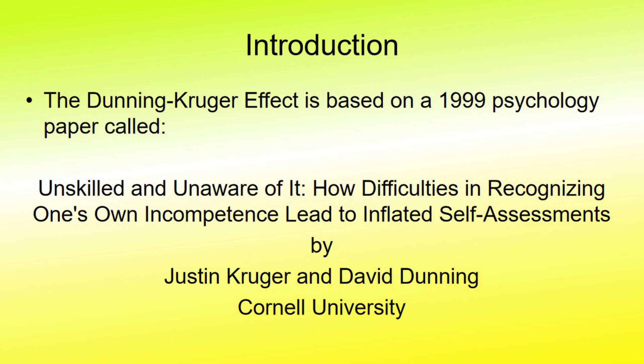The Dunning-Kruger effect is based on a 1999 psychological paper called Unskilled and Unaware of It, How Difficulties in Recognizing One's Own Incompetence Leads to Inflated Self-Assessments by Justin Kruger and David Dunning of Cornell University.